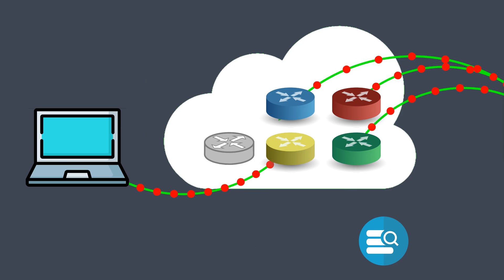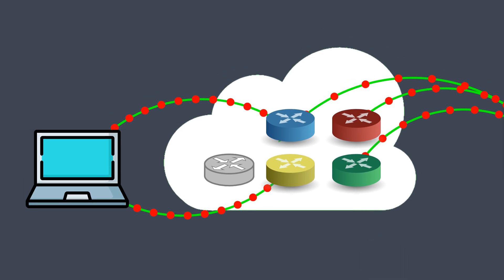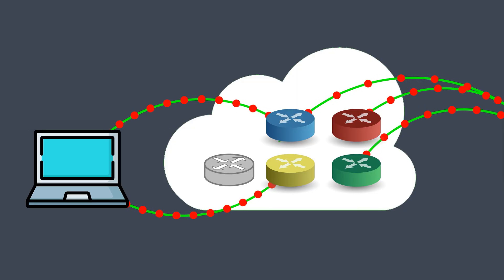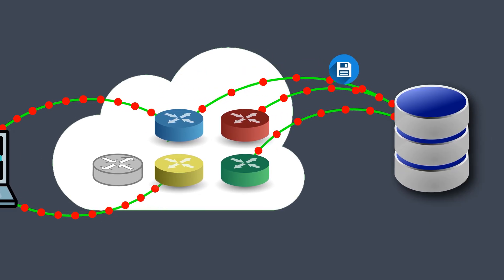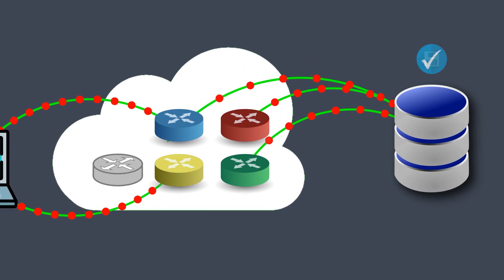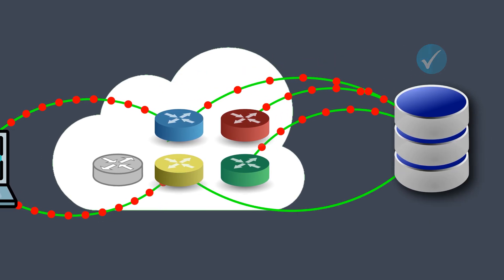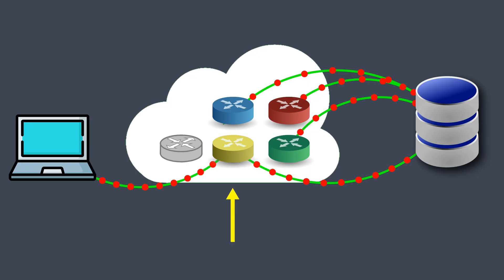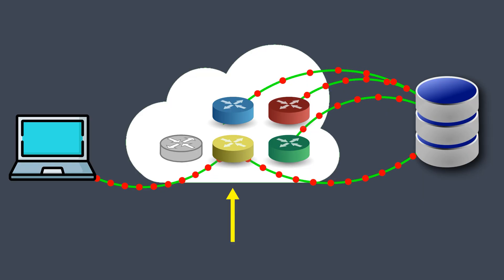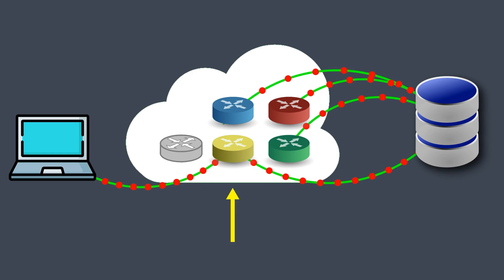Once it has the details, it contacts one of the introduction points to establish a connection to the hidden service. The client then sends a one-time cookie and cryptographic keys to tell the server to connect to the rendezvous point. The server uses this information to establish a connection to the rendezvous point, and once the connection is established, both the client and the server are successfully connected, allowing them to exchange information while keeping each other's identities anonymous.